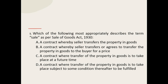Q5: Which of the following most appropriately describes the term 'sale' as per the Sale of Goods Act 1930? The options are: a contract where the seller transfers the property in goods; a contract where the seller transfers or agrees to transfer the property in goods to the buyer for a price; a contract where the transfer of property in goods is to take place at a future time. The correct option is: a contract where the seller transfers or agrees to transfer the property in goods to the buyer for a price.